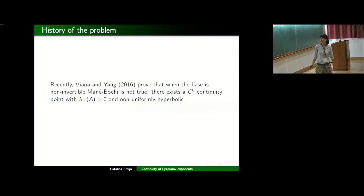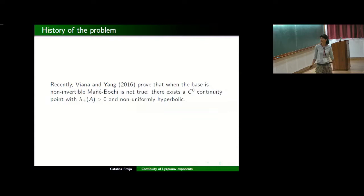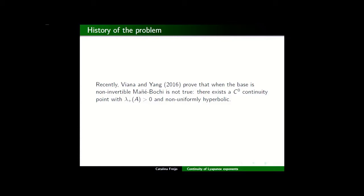Recently, Marcelo and Yang Yang in 2006 proved that when the base is not invertible, the result of Mañé-Bochi is not true. There exists, they give an example of a C-zero continuity point with positive Lyapunov exponents and it's not uniformly hyperbolic. So what is this example?